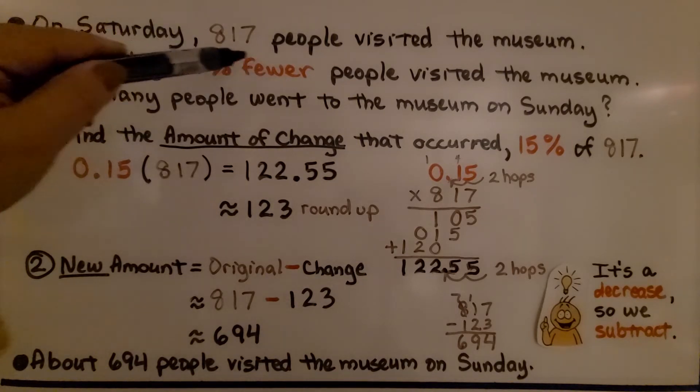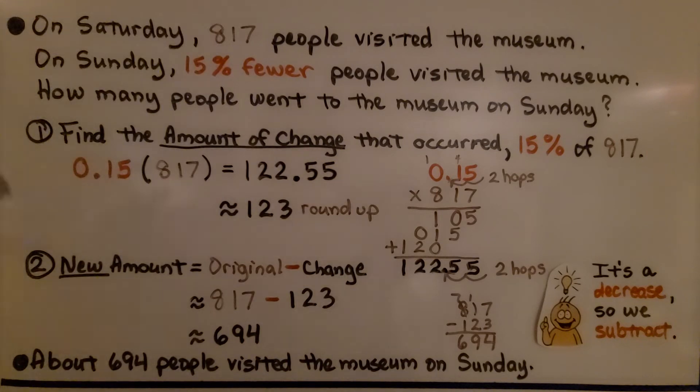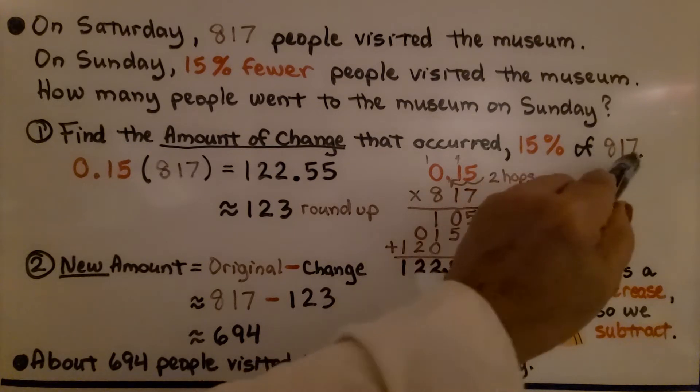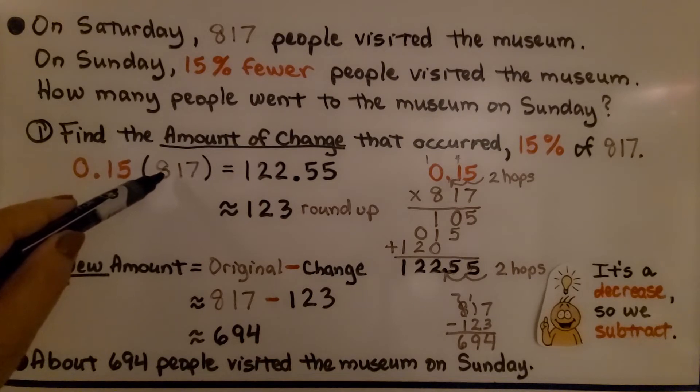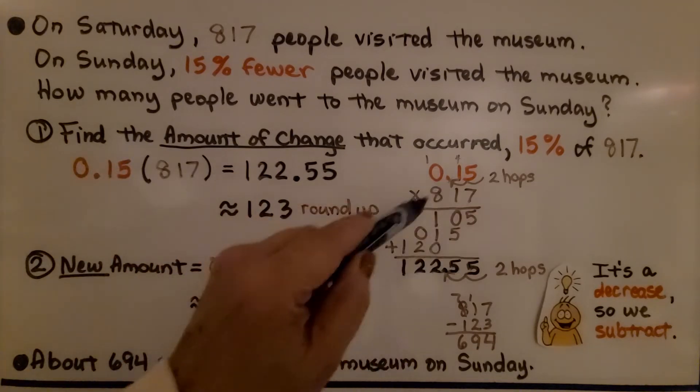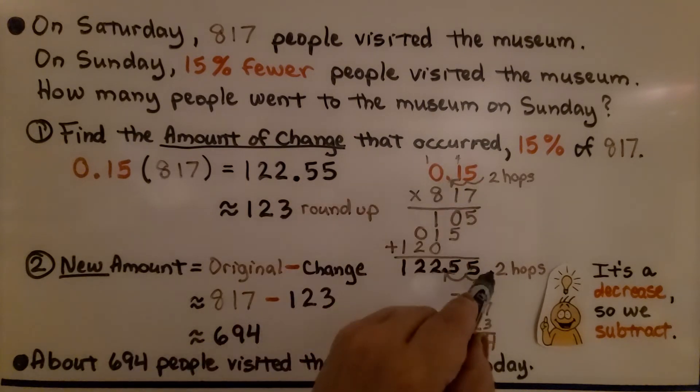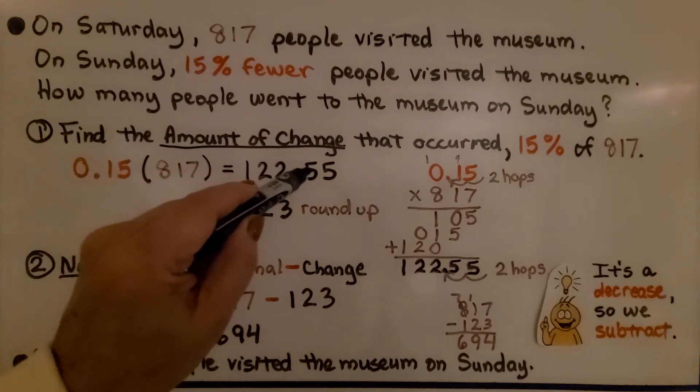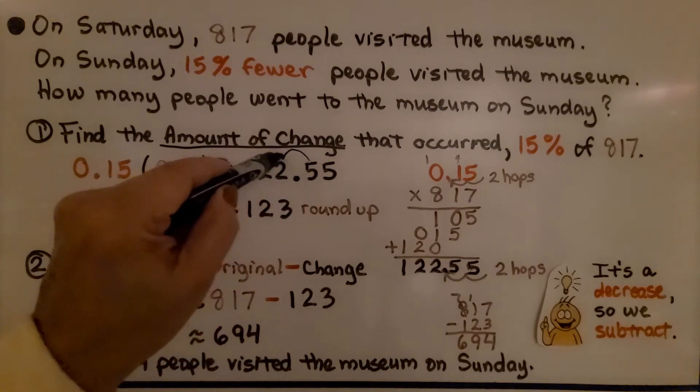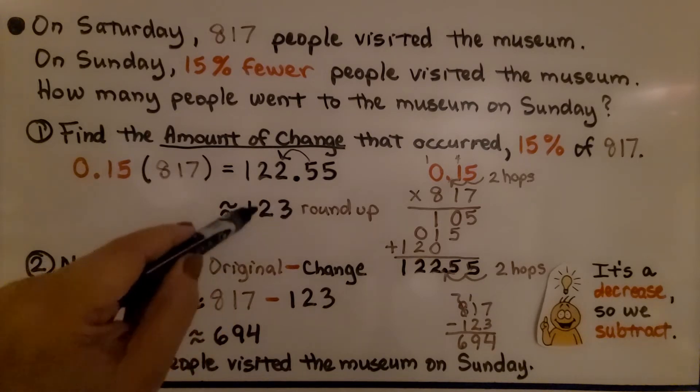We can see there's fewer on Sunday, so this is going to be a decrease. We find the amount of change that occurred. We need to find 15% of 817. We do the decimal form of 15% as 0.15, which is 15 hundredths. We multiply it by the original amount, 817. We can do a little multiplication on the side. We have a decimal point that's 2 hops, so our product's going to have 2 hops. We're going to get 122 and 55 hundredths. This 5 tells the 2 to round up to a 3, and we round it off to approximately 123.